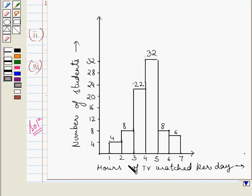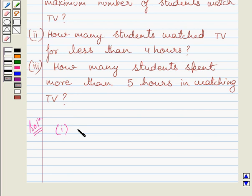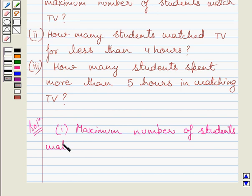Now observe the given histogram. The height of a bar gives the number of data items in a particular group. Clearly you can see this is the longest bar, so the maximum number of students is equal to 32. And the hours for which they watch TV per day is given by the width of this bar. So, hours of TV watched per day is equal to 4 to 5 hours. Maximum number of students watched TV for 4 to 5 hours.